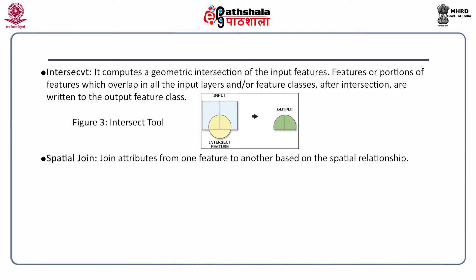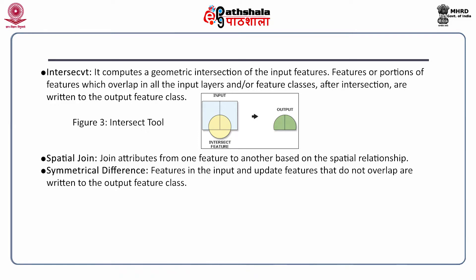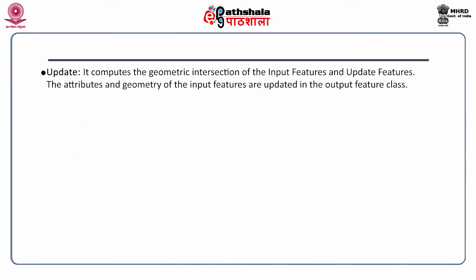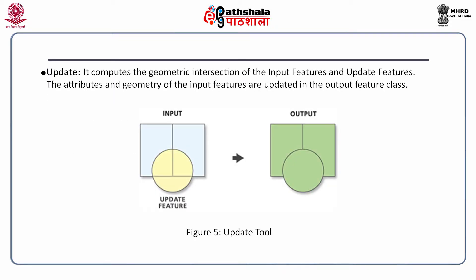The next tool is spatial join, which joins attributes from one feature to another based on the spatial relationship between those features. The next tool is symmetrical difference — features in the input and update features that do not overlap are written to the output feature class, as shown in figure 4. The next tool is the update tool, which computes the geometric intersection of the input features and the update features; the attributes and geometry of the input features are updated in the output feature class.